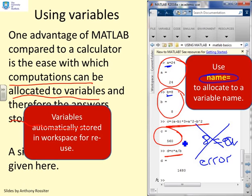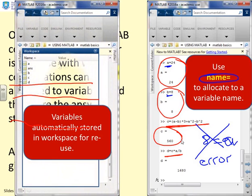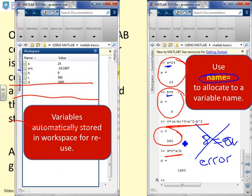The variables are automatically stored in the workspace for reuse. If you look at the workspace, you'll see this workspace tab here. And you'll see it's stored A, it's stored B, it's stored C, it's stored D. You've entered them and it's saved them.